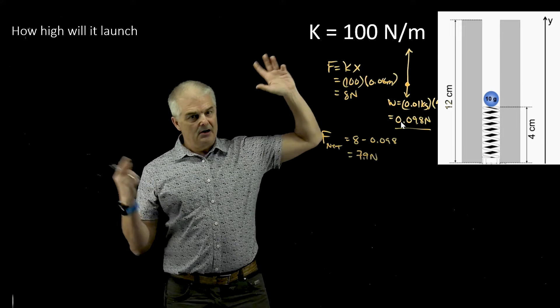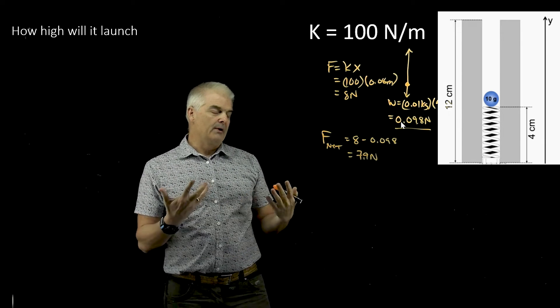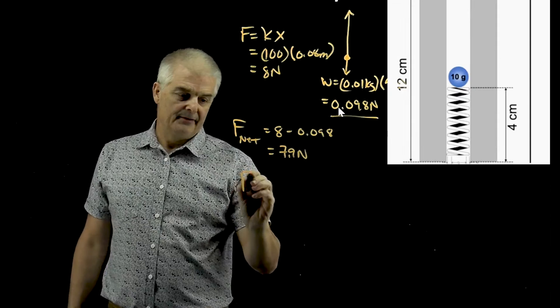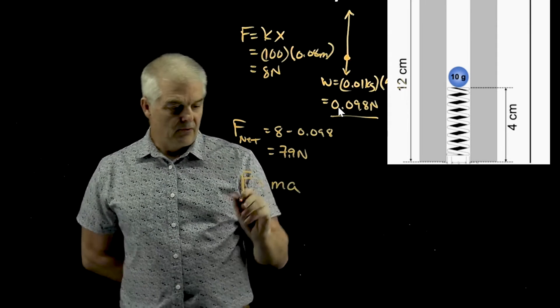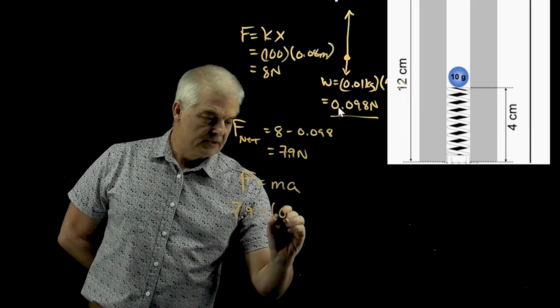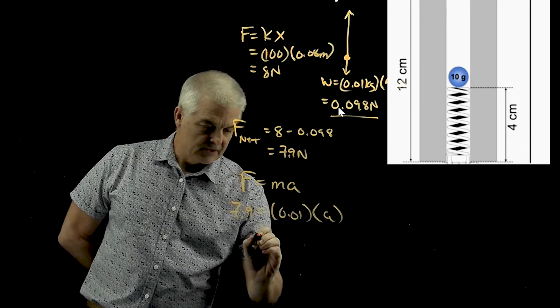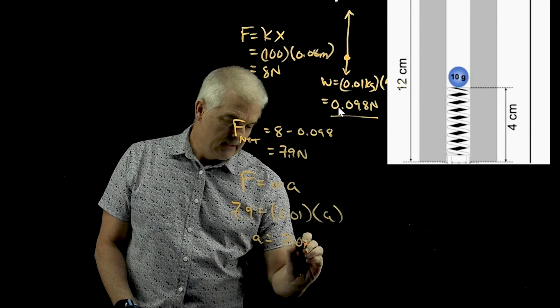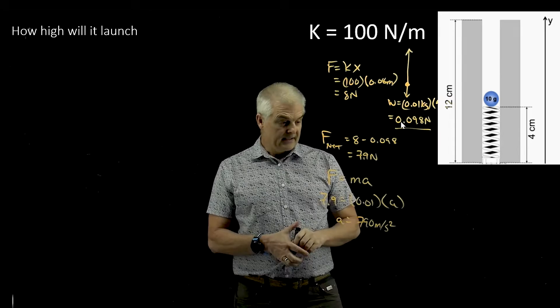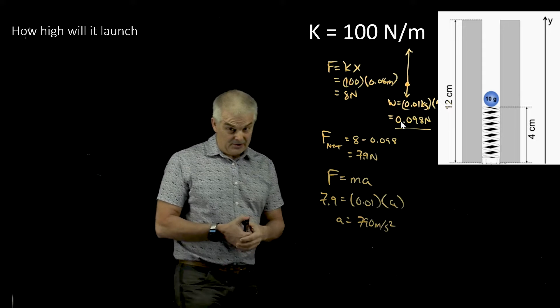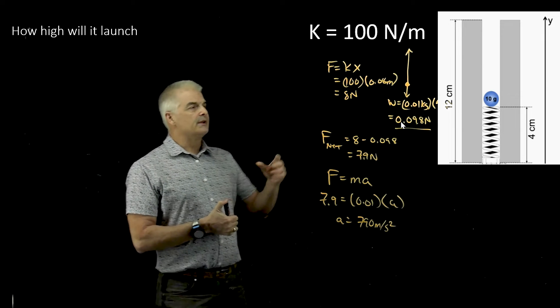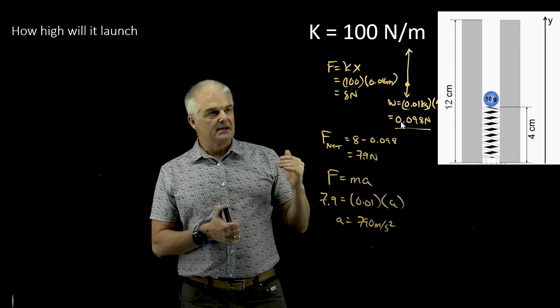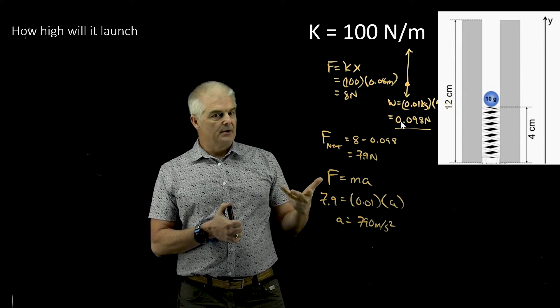The question is, how far will it go up into the air? So now we have a Newton's law kinematics equation, because we know that F equals Ma. So we can solve this force, we can say 7.9 equals 0.01 times A, and we can solve for A, and A is a big number, as it turns out, it would be 790 meters per second squared. That seems like a crazy high acceleration, and it is, but remember, it's only going to accelerate for the gap between 4 and 12 centimeters. So only when the spring is in contact with the ball is it going to accelerate.